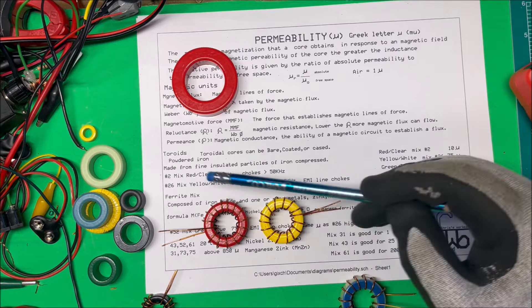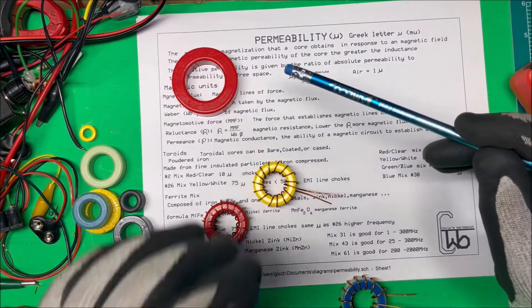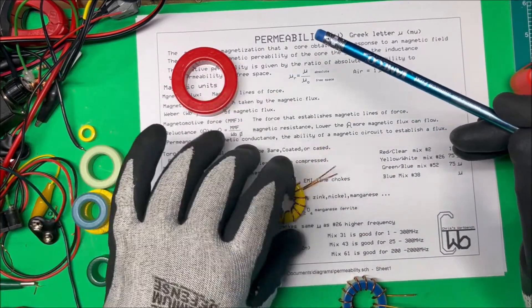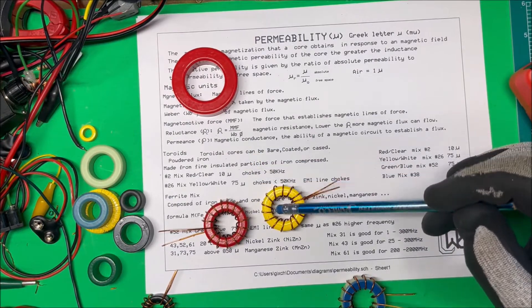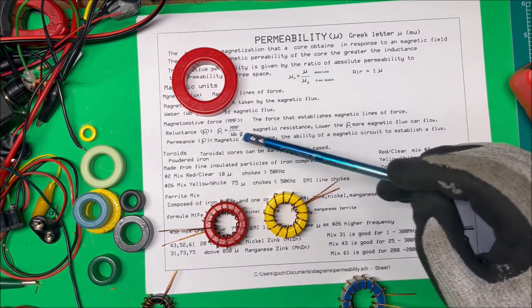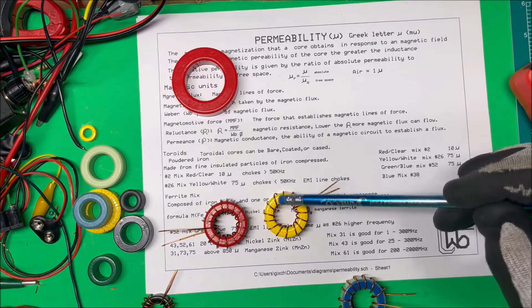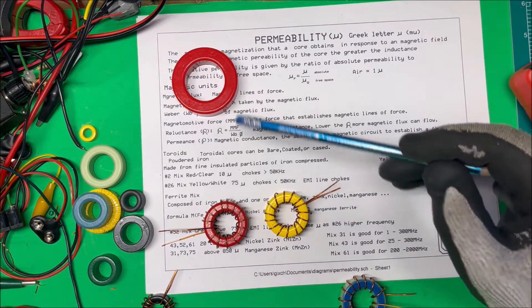And this number 26 here, this one here, yellow and white on the back, that has a permeability of 75. So these you can use for a little bit higher frequencies than the red ones here. And we'll test the inductance of these.